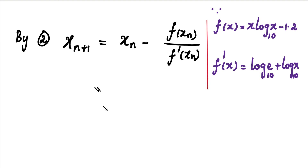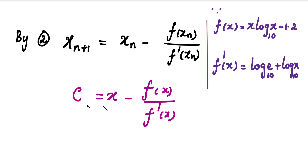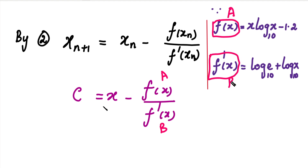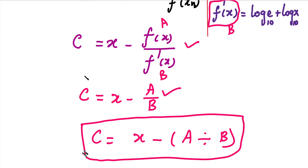On the right-hand side we substitute x, so it becomes x - f(x)/f'(x). On the left-hand side we store the result as C. We store f(x) as A and f'(x) as B. Then Newton's Raphson formula becomes C = x - A/B. We store these three equations in the calculator.